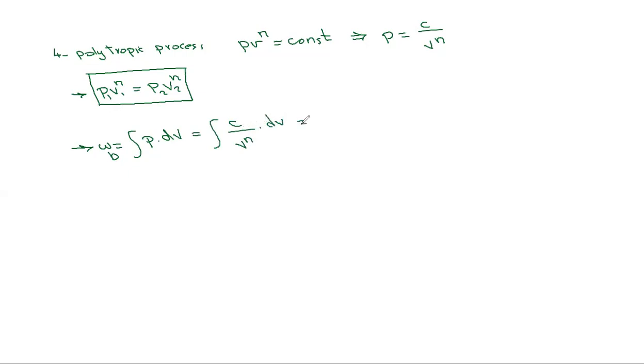This equals the constant times the integration of V to the power minus n dV. The integration of V minus n - I'll add 1 to the exponent.